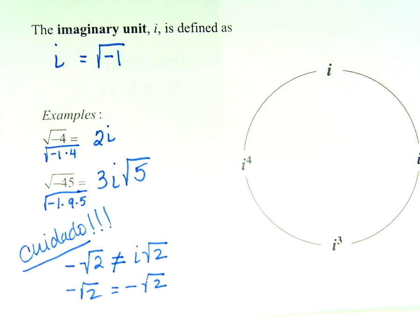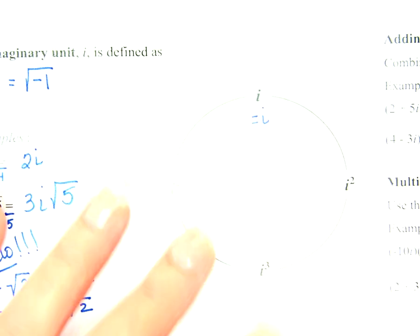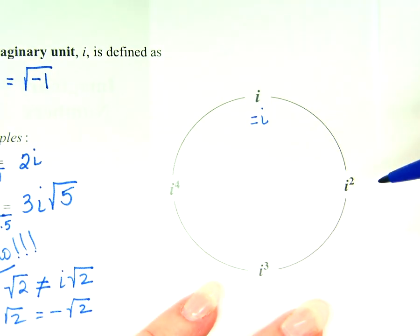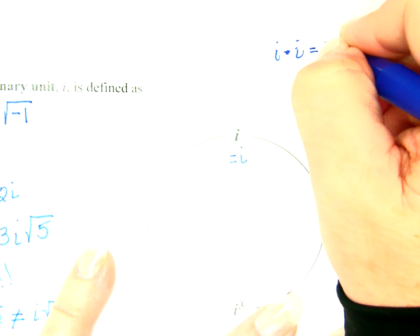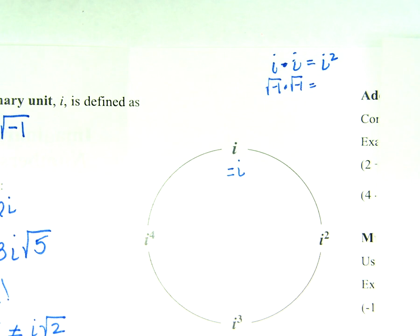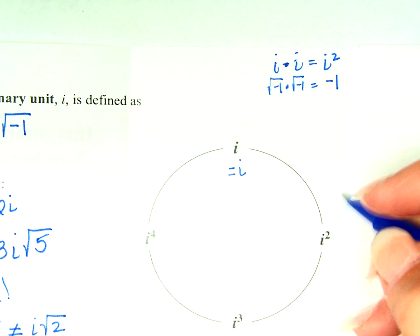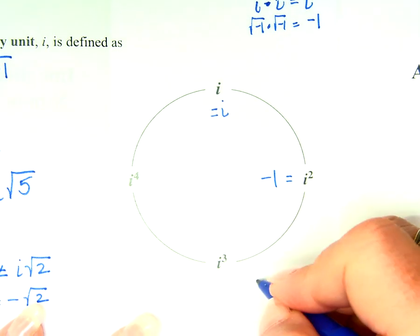Does everybody understand that? Look at the circle that's right there beside it. Is this a true statement: i equals i? How do I get i squared? i times i, right? We said it was i squared. What did we just decide i was equal to? The square root of negative 1. What's the square root of negative 1 times the square root of negative 1? If I multiply two square roots together, the number inside — negative 1. So i squared equals negative 1.